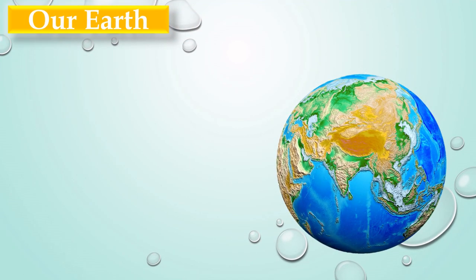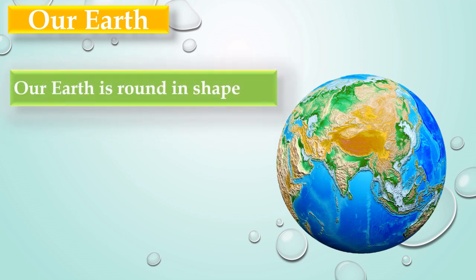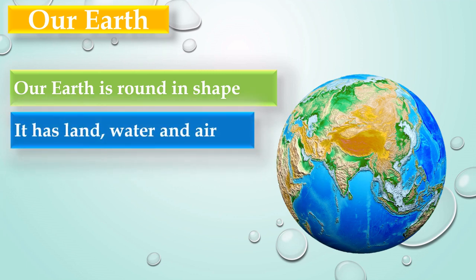Now, we will see about the shape of the Earth. Look at the image. We can see the Earth is round in shape. And it has land, water and air.